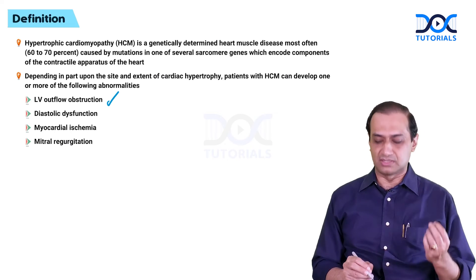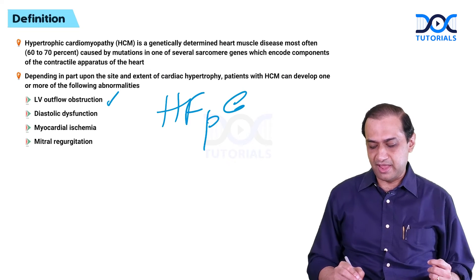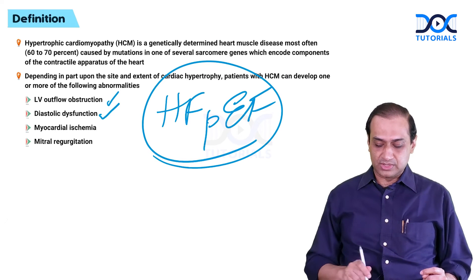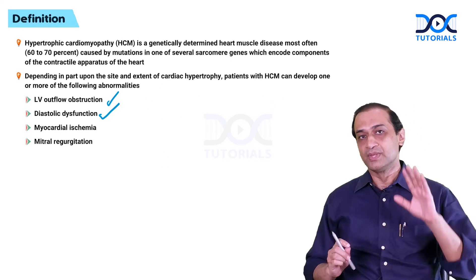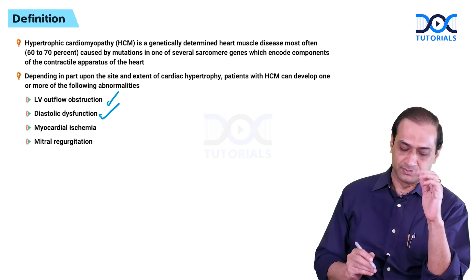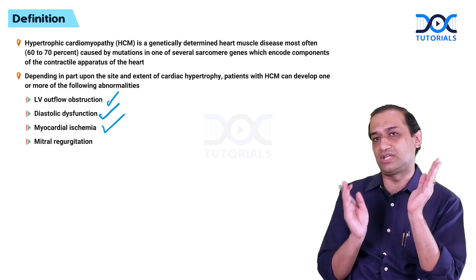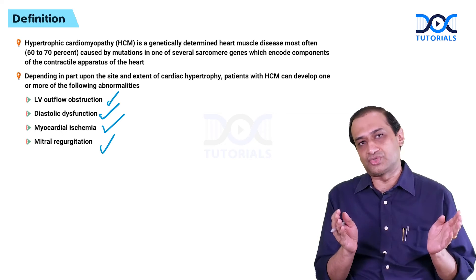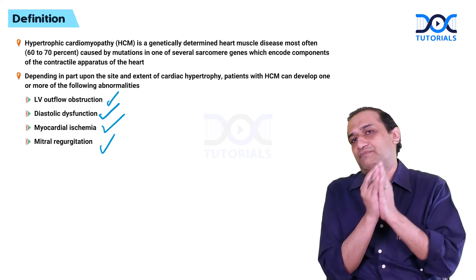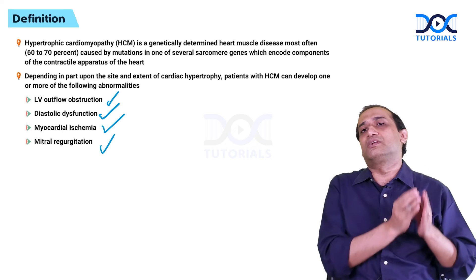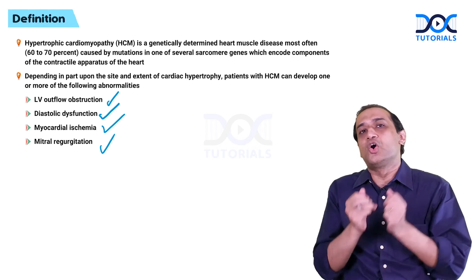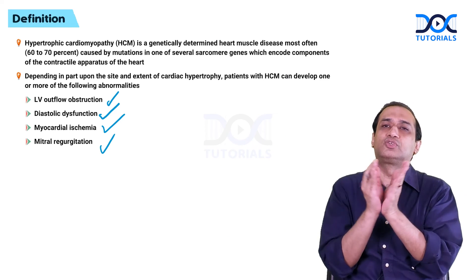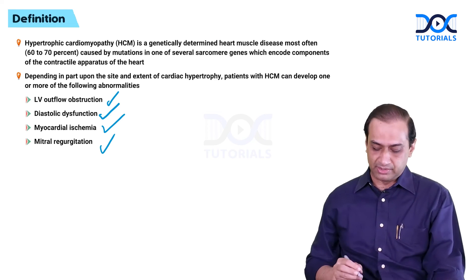The second parameter is heart failure with preserved ejection fraction — HFpEF — which is essentially diastolic heart failure, often diagnosed in this subgroup. Despite having normal coronaries, these patients have a significant amount of myocardial ischemia documented by various modalities of ischemic assessment. Additionally, because of structural abnormalities and valvular pathophysiology, the Venturi or drag effect pulls the mitral leaflet into the LVOT, causing non-apposition of the two leaflets and hence mitral regurgitation.